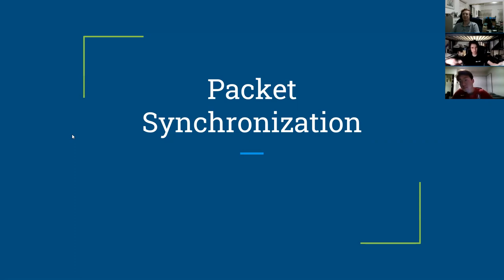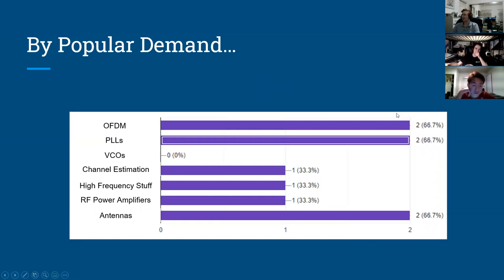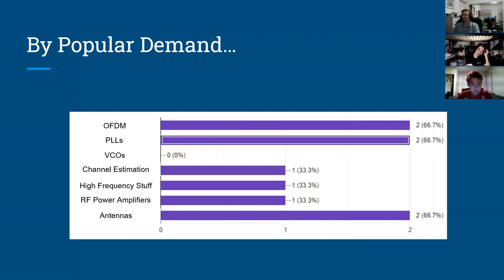Welcome to WRAP lecture seven. Today is packet synchronization. Before we get into everything, there was a poll that went out a few weeks ago, and the number of respondents is very large at three. By popular demand, we have two votes each for OFDM, PLLs, and antennas — those are the top three topics we'll cover in the remainder of the quarter. Sad that nobody picked VCOs; that's a fun topic.